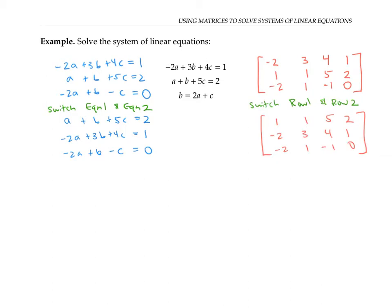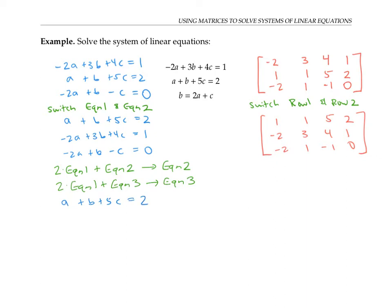Now I'm going to try to eliminate the variable a in the second and third equations. I can do this by adding twice the first equation to one time the second equation, and then replacing equation two with this sum. Similarly, I can add twice the first equation to equation three, and replace equation three with that sum. So first I'll just copy down equation one because it's not changing.